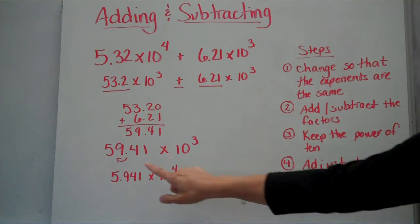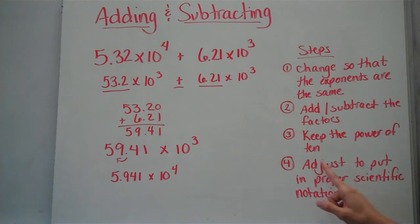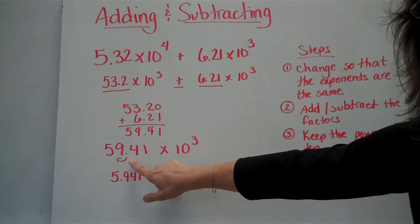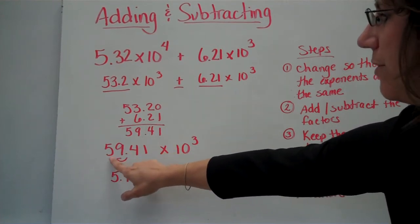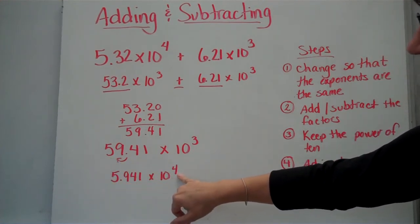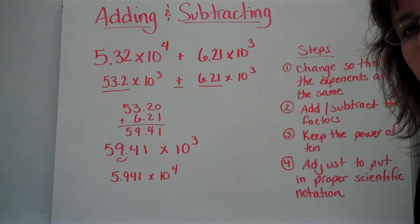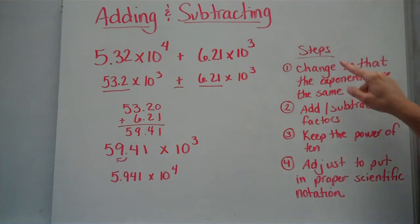And finally, you're going to take your new answer, 59.43 times 10 to the third, and you're going to change it and adjust it and put it back in proper scientific notation. Remember, this factor must be between 1 and 10, and right now it's at 59. So we're going to move that decimal point forward one. That will make me add 1 to my exponent, and now I'm in the proper scientific notation. So go ahead and pause the video if you need to. Really study the example and make sure you understand the steps. And copy down the rules here, and that will help you in future problems.